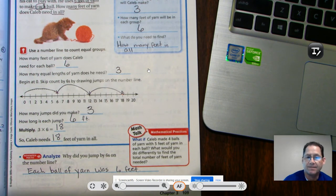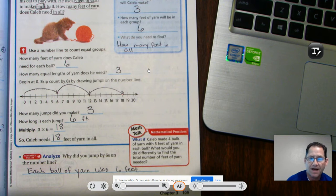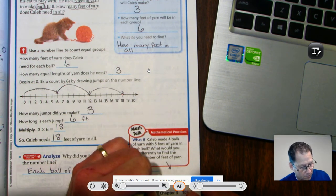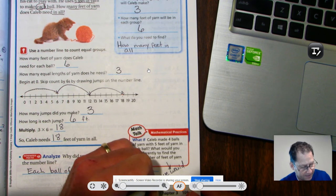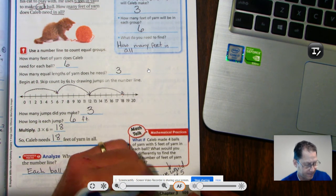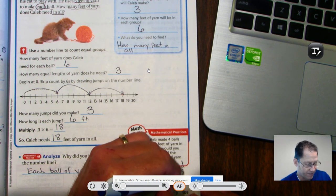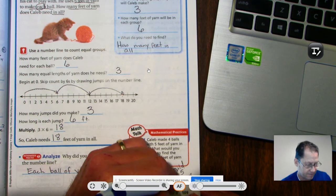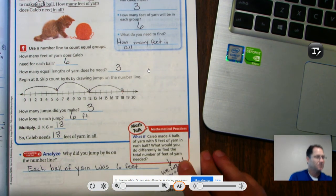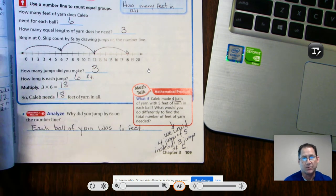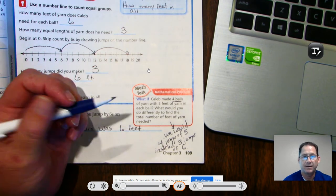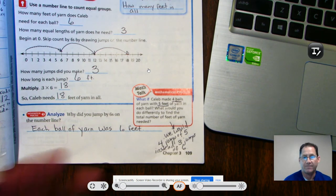Our math talk for today. What if Caleb made four balls of yarn with five feet of yarn in each ball? What would you do differently to find the total number of feet of yarn needed? Well, we would make four jumps of five instead of three jumps of six. So here we have four balls, so that means four groups. And when we're using the number line, we can think of groups as jumps. And each jump was five feet. So we would make four jumps of five.